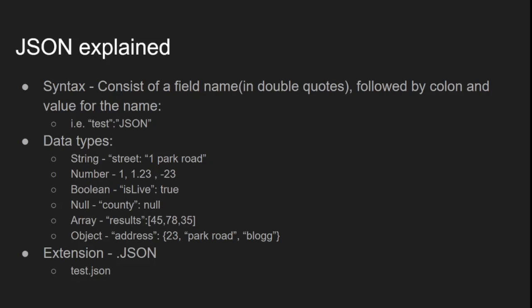Next is null — for example, if an address has no county field you can simply put null and it will pass through. Then there is array, which works just like a normal array. For example, exam results could be an array of numbers like 45, 78, or 35.